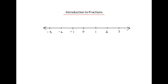Now, fractions can also occur at other points on the number line. For example, what would the fraction be halfway between the whole numbers 1 and 2? As before, we can represent the whole numbers as circles — so 1 circle for number 1, and we'll add another circle to show that we have 2 for the number 2.